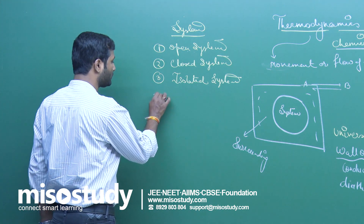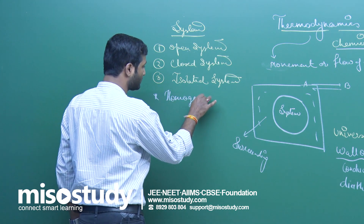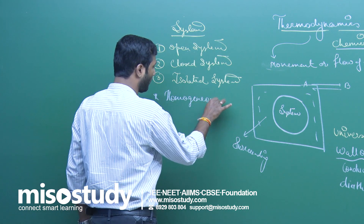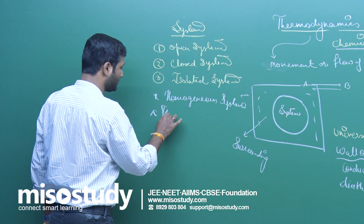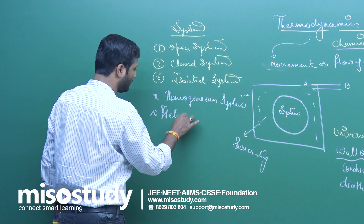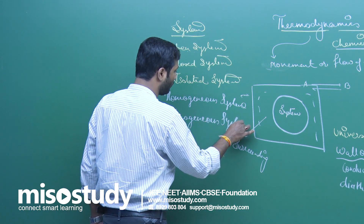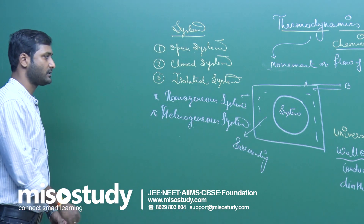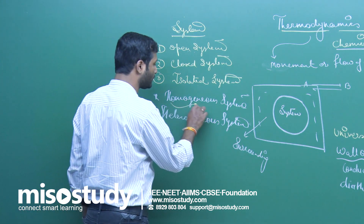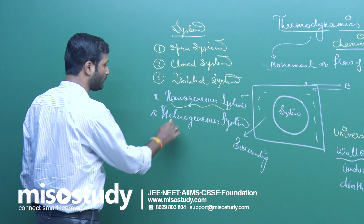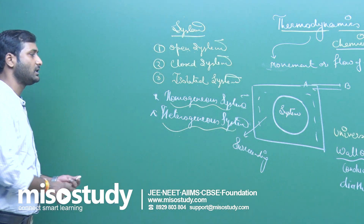Except these three, we have two more types of systems — homogeneous system and heterogeneous system. A system which has uniform composition throughout is homogeneous, and a system which has non-uniform composition throughout is treated as a heterogeneous system.